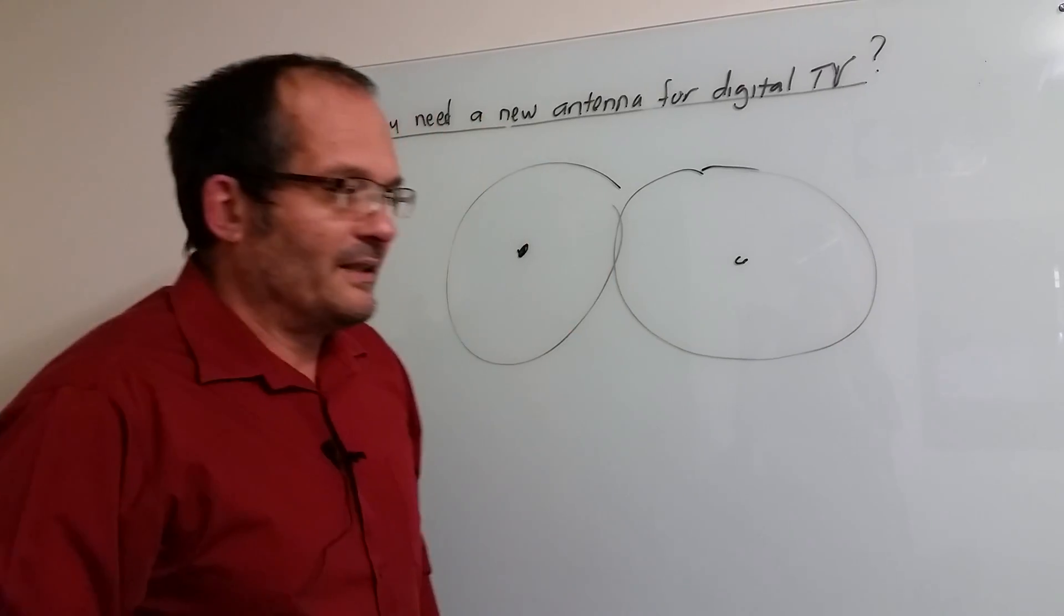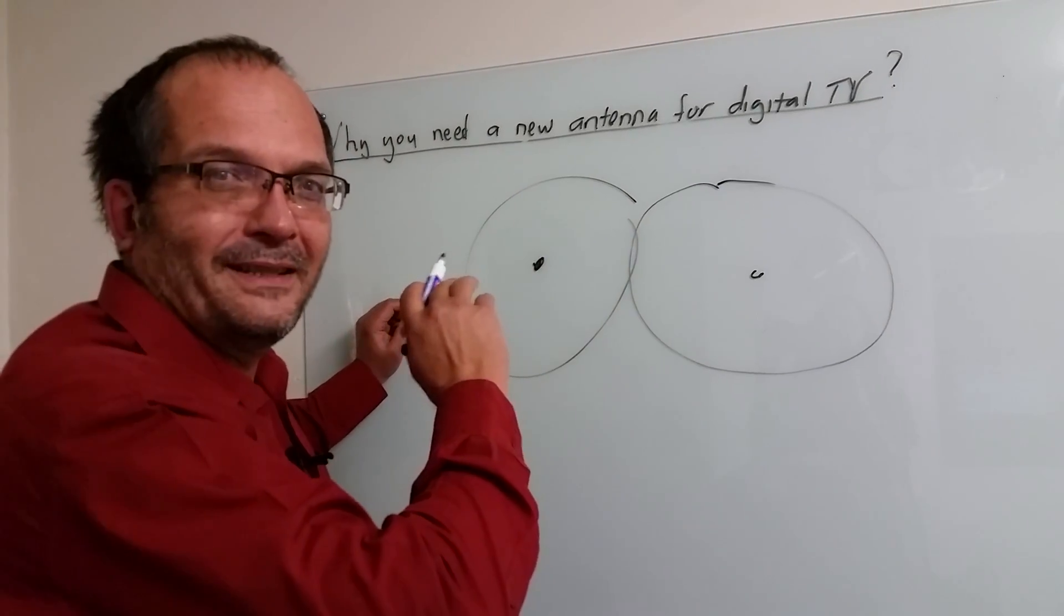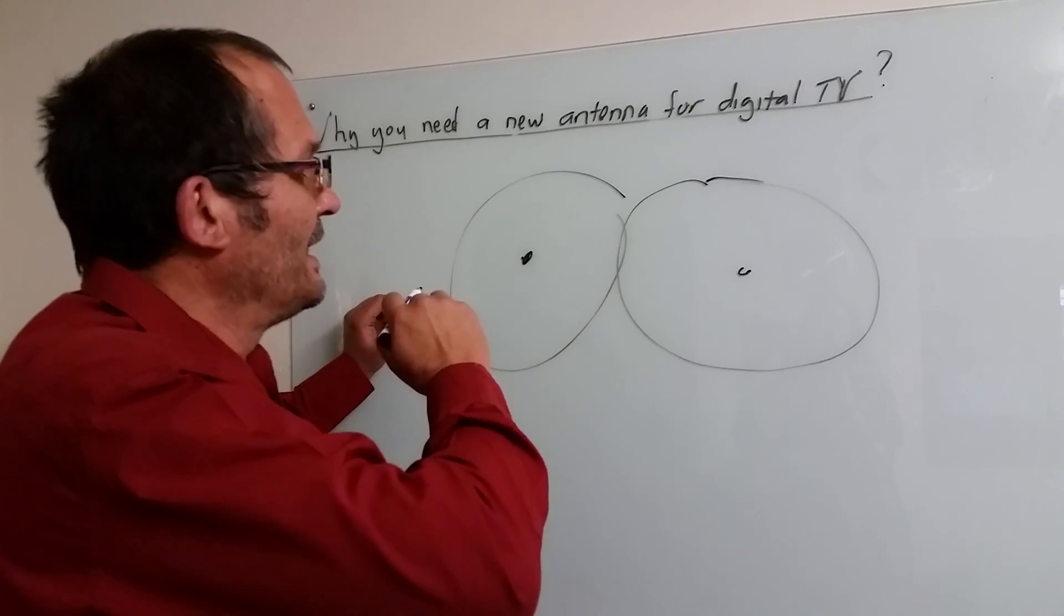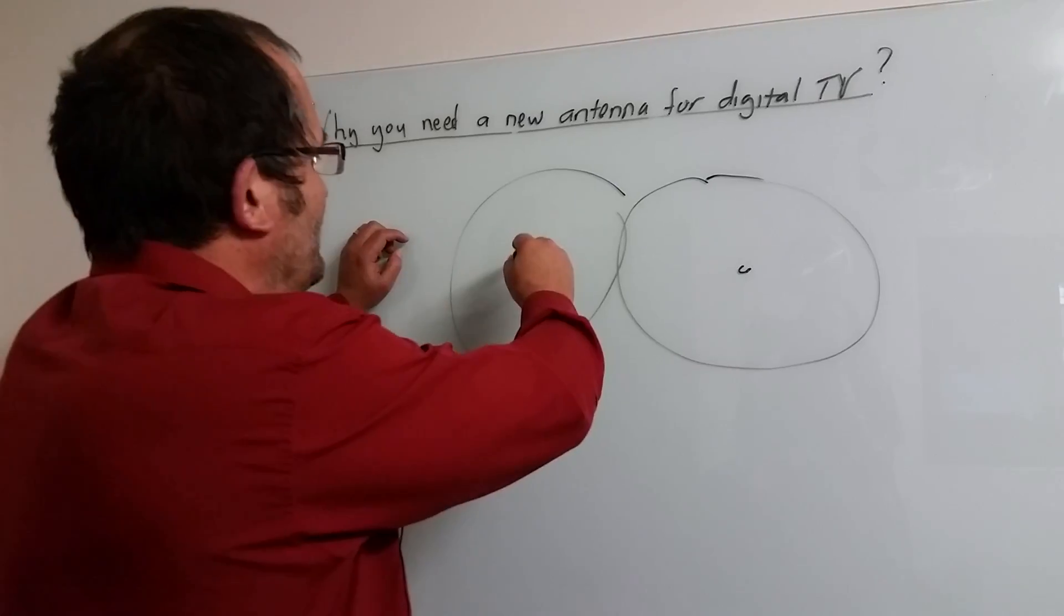Now the first thing I just want to mention is that tongue-in-cheek we call it the digi ant but you don't need any digital antenna. An antenna just receives radio waves and it's more or less at the same frequency bands.